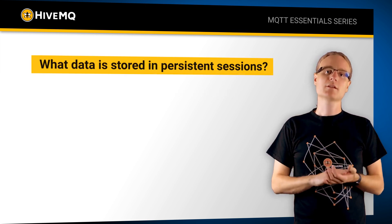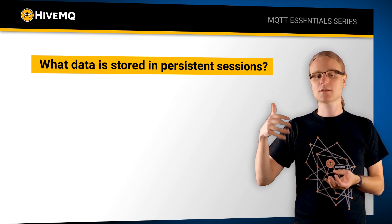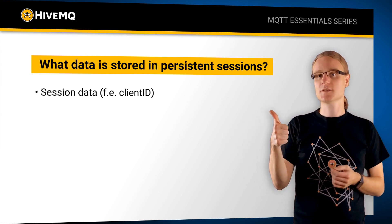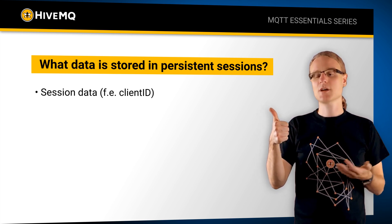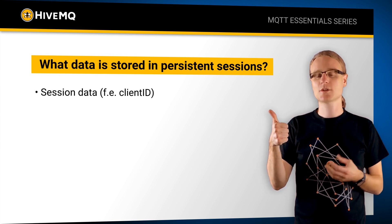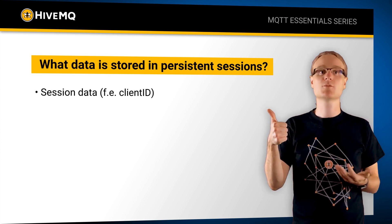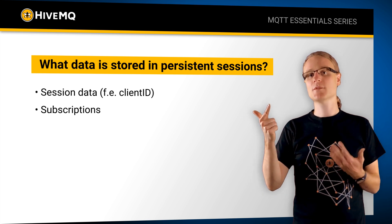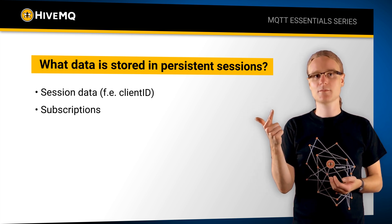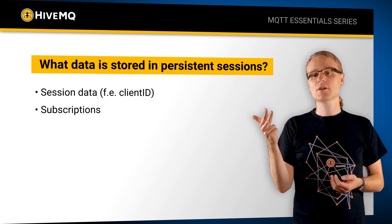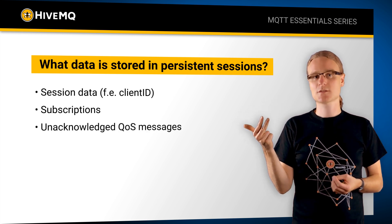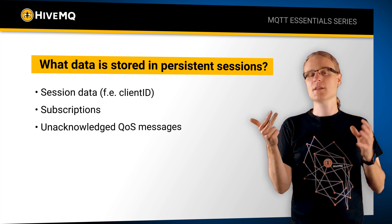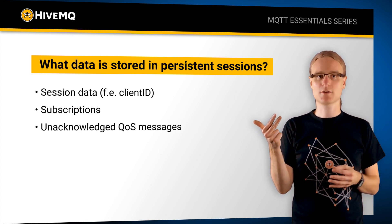But what data is persisted actually on the broker? What data does the broker remember? We have the session data itself, like the client identifier. Sometimes some brokers also give you the ability to understand when the client was last connected. Then subscriptions — the broker remembers the concrete subscriptions of the client. Also, if there are any quality of service messages which are not acknowledged yet, the broker will remember, and so the MQTT message flow can be resumed at a later point in time.